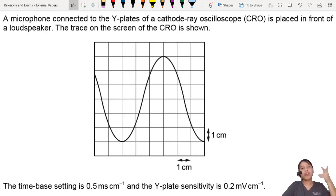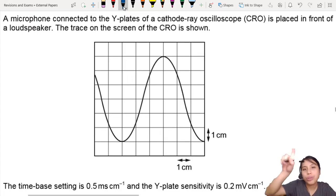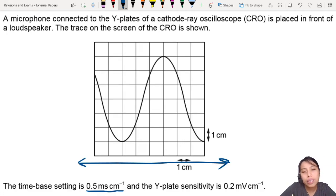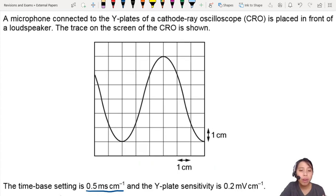Here we have a microphone CRO question. They show you the trace, the wave going up and down. The time-based setting is 0.5. What does the time-based mean? It means you are changing the axis this way. Each box is how many milliseconds. That's what they're telling you, so 0.5 milliseconds each cm.